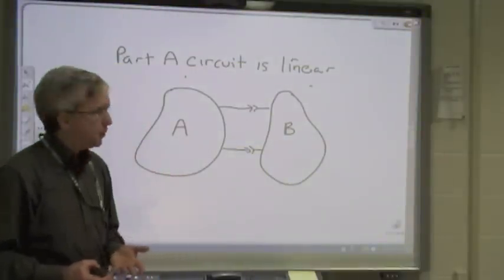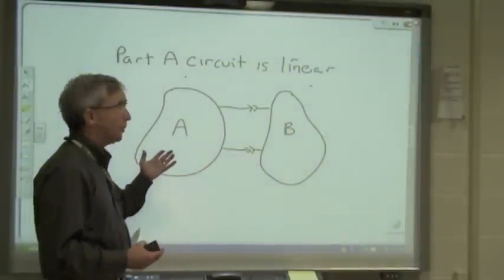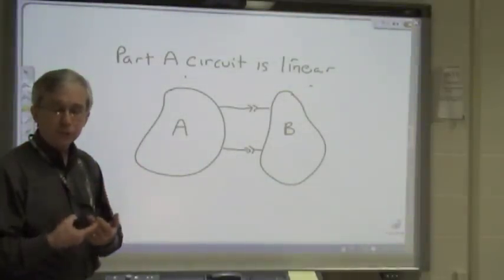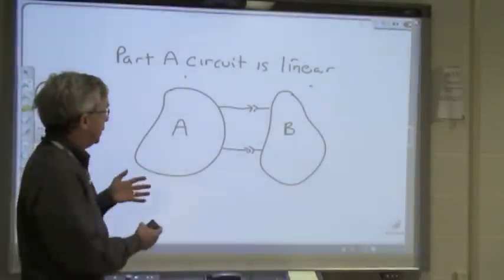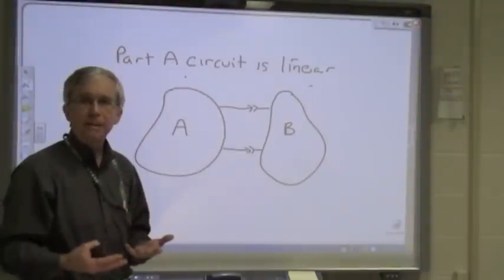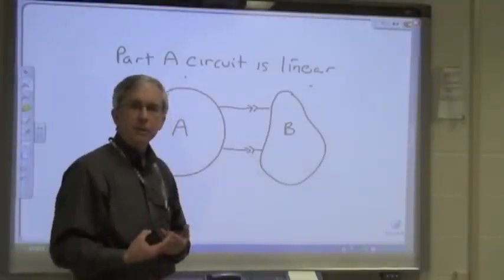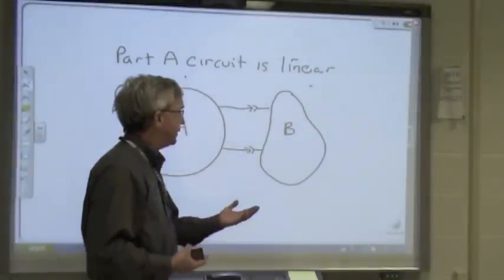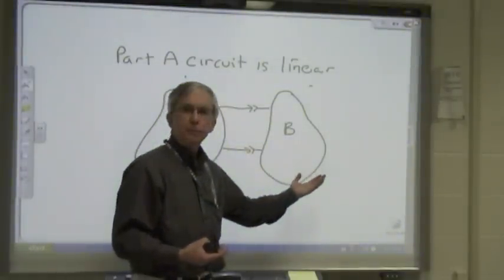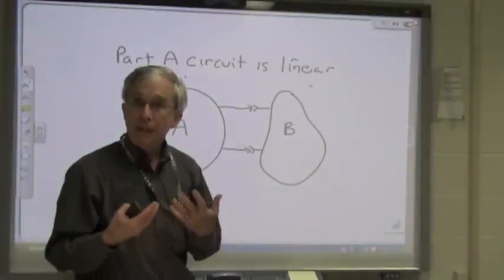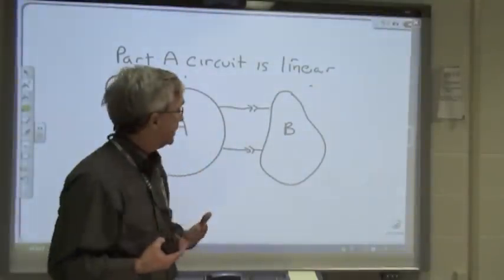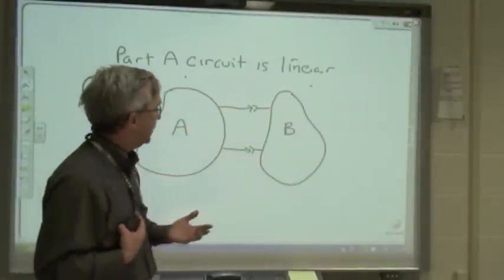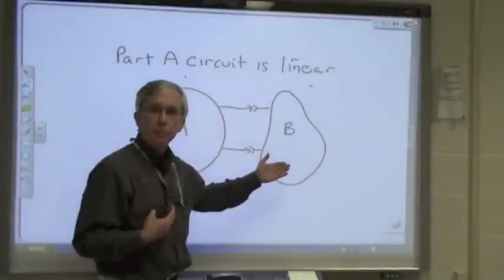Going back to our original picture of the circuit divided into parts A and B, this concept is especially useful whenever part of the circuit essentially remains the same but another part changes quite frequently. For example, if this is the source circuit, we may be plugging different boards into its terminals. The source circuit doesn't change, so it's really convenient to replace it by its Thevenin equivalent, while part B changes.